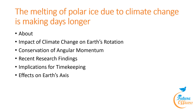Next topic: the melting of polar ice due to climate change is making days longer. Recent research indicates that climate change is slowing Earth's rotation due to melting polar ice caps, which alters the planet's moment of inertia. Scientists discovered that the melting of polar ice caps has caused the Earth to spin slower. The slowing results in minuscule changes in the duration of a day, which could impact technology relying on precise timekeeping such as computer networks and space travel.